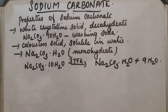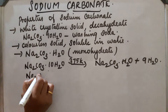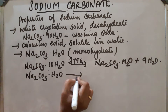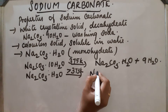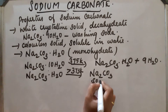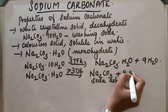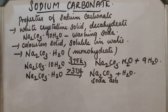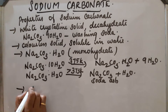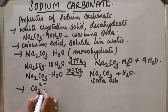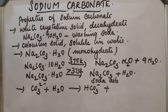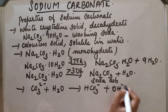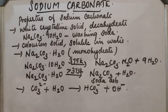The monohydrate, on further heating above 373 Kelvin, gets converted into anhydrous sodium carbonate (Na2CO3), called soda ash, plus H2O. Additionally, sodium carbonate hydrolyzes in water: CO3²⁻ + H2O → HCO3⁻ + OH⁻. Due to the presence of OH⁻ ions, the solution is alkaline in nature.